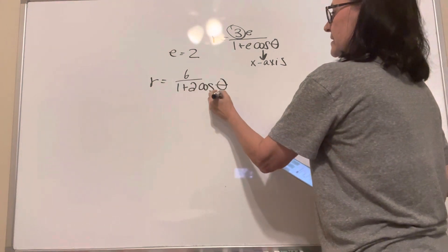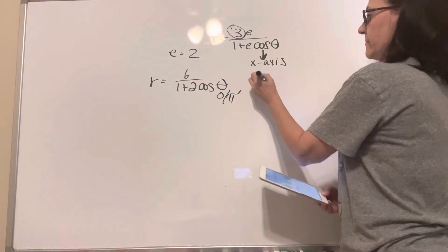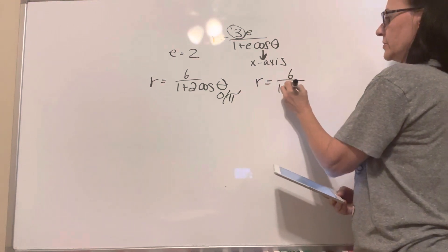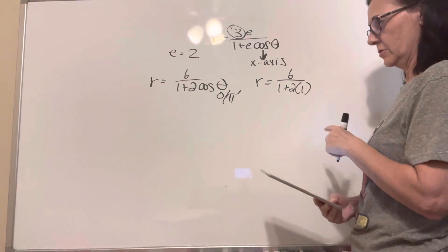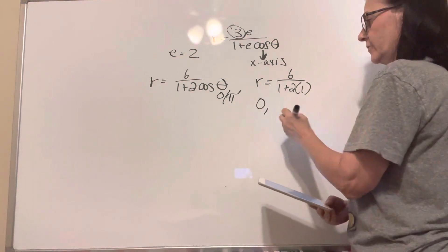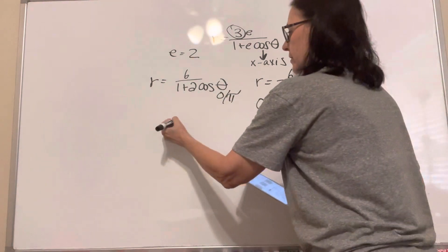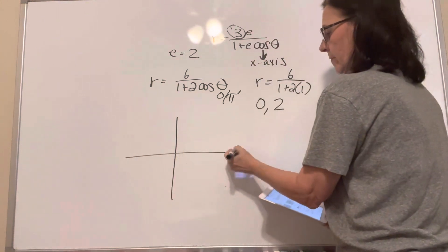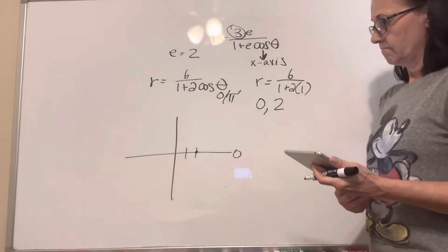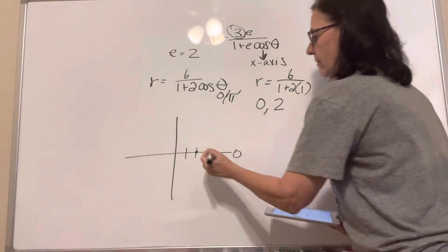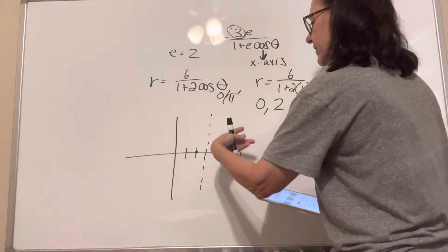Again, I plug in 0 and pi for theta. So when I plug in 0, it's 6 over 1 plus 2 times 1. That's 6 over 3, which is 2. So it's going to be the point (0, 2) — that's going to be when I go towards 0, I'm going to have a vertex at 2. Remember, my directrix is still at 3. So I think it's going to open this way and this way.